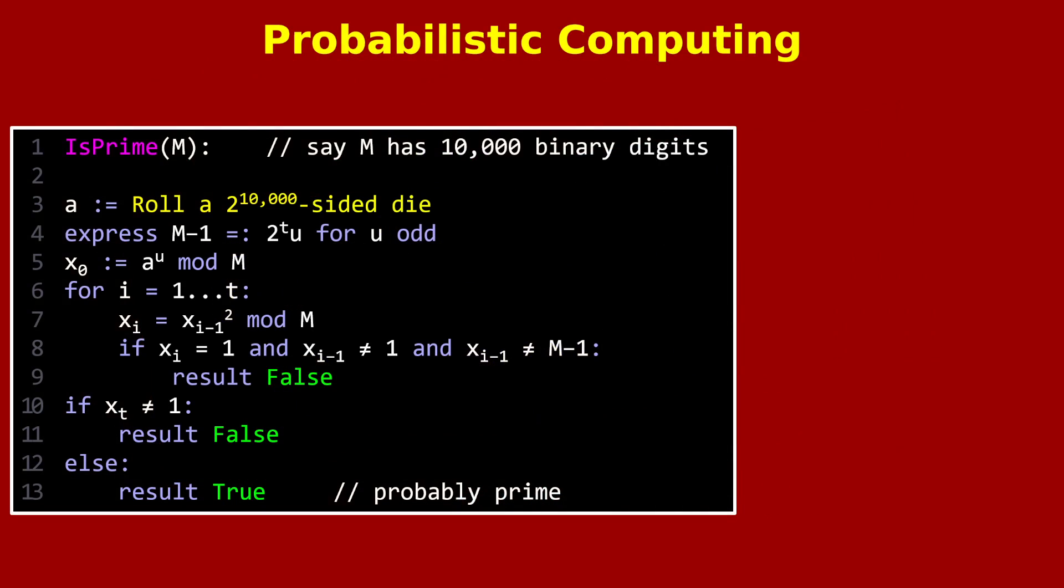Here's a snapshot of some pseudocode that solves the problem of determining whether a number M with, let's say, 10,000 binary digits is a prime. The actual details aren't important. The only thing I want you to notice is that the very first line of code generates a random number, say by rolling a 2 to the power of 10,000 sided die.